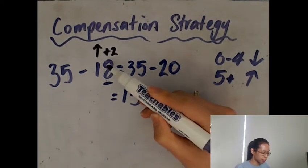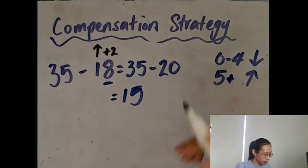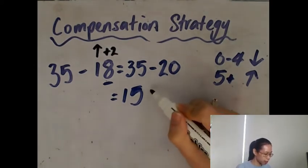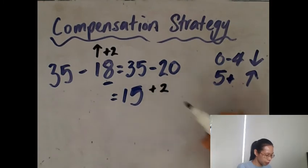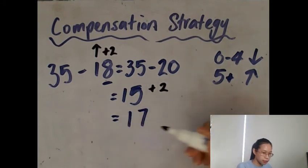Now because we added two on the left, then we're going to add two to this side as well. So I'm going to plus two and then the answer is 15 plus two is 17.